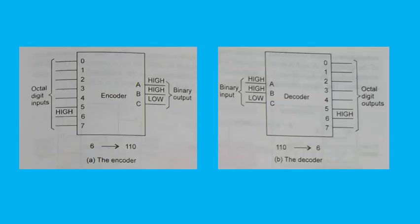Encoding is the process of converting a familiar number or symbol to some coded form. An encoder is a digital device that receives digits (decimal, octal, etc.) or alphabets or special symbols and converts them to their respective binary codes. In the octal-to-binary encoder shown in fig. a, a high level on a given input corresponding to a specific octal digit produces the appropriate 3-bit code ABC on the output. The figure illustrates encoding of octal digit 6 to binary 110.